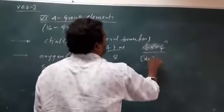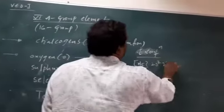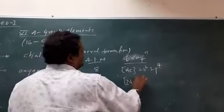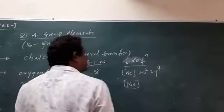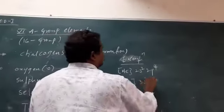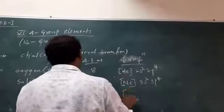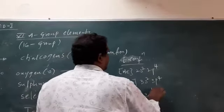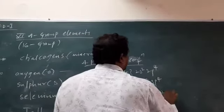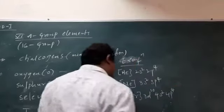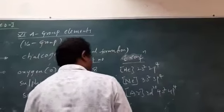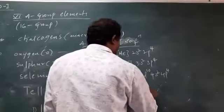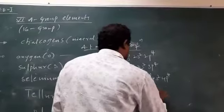After Helium, 2s2 2p4. And for Sulfur after Neon, 3s2 3p4. And for Selenium after Argon, 3d10 4s2 4p4. And for Tellurium, Krypton 4d10 5s2 5p4.